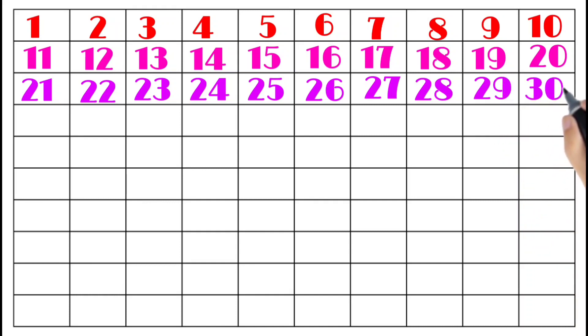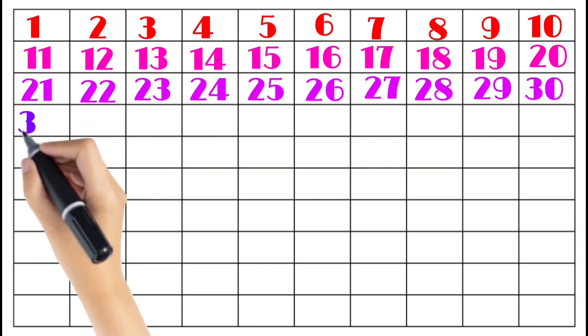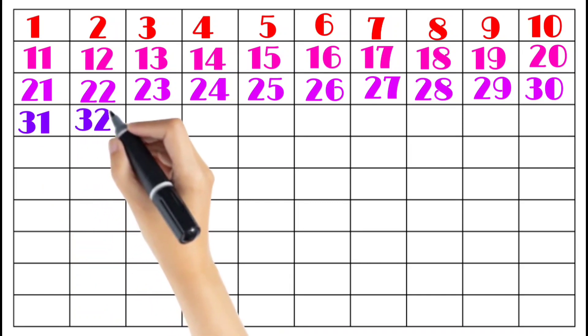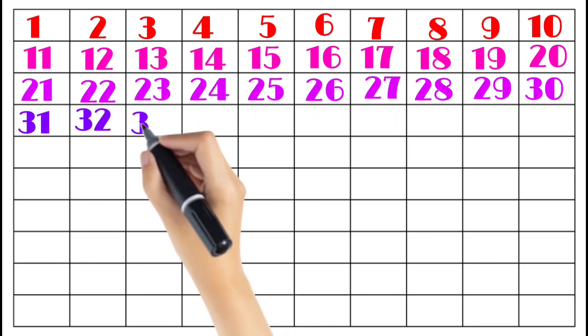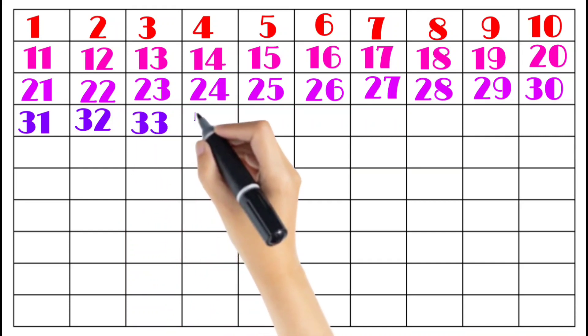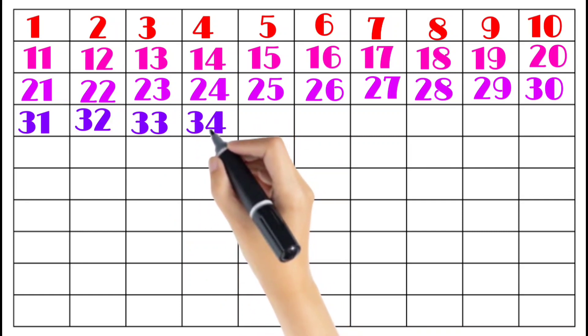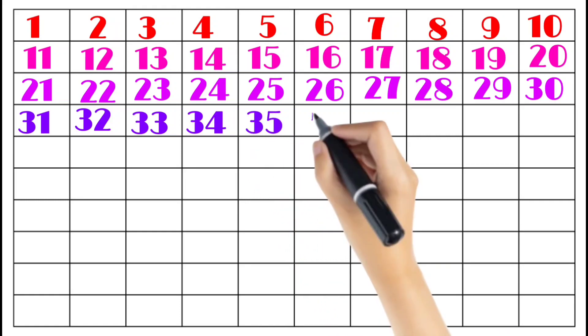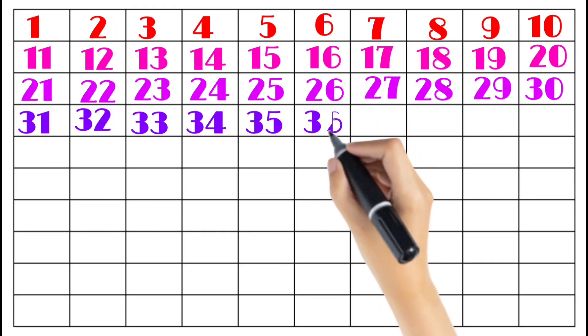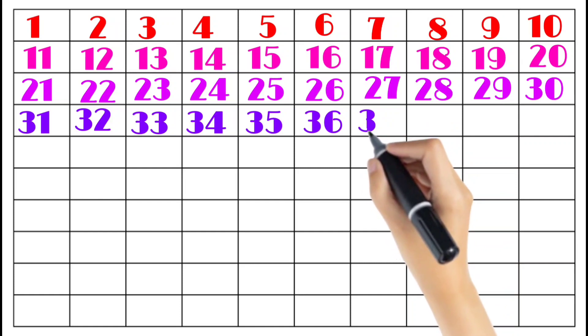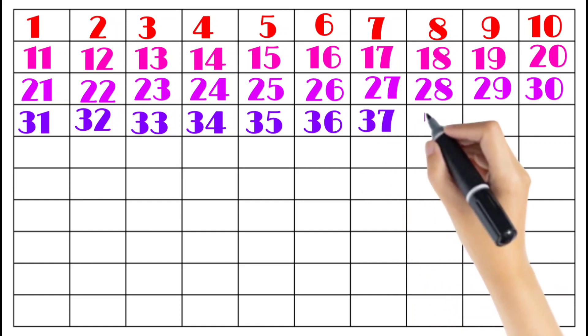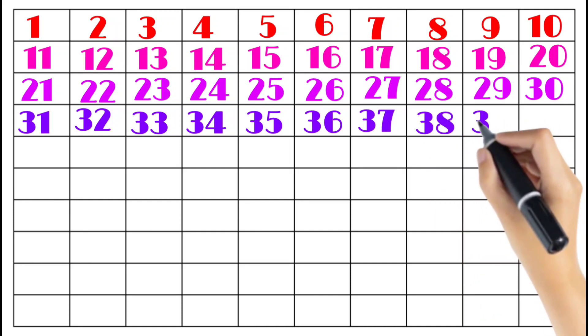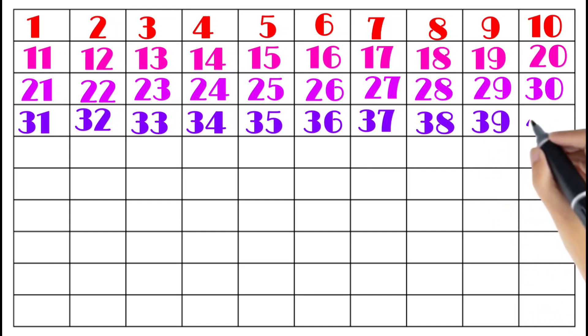Thirty-one, thirty-two, thirty-three, thirty-four, thirty-five, thirty-six, thirty-seven, thirty-eight, thirty-nine, forty.